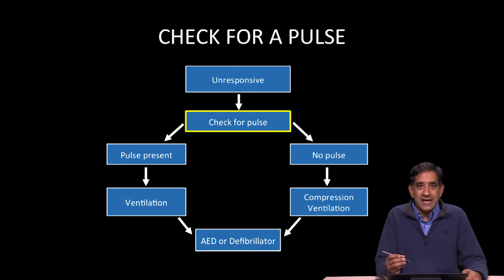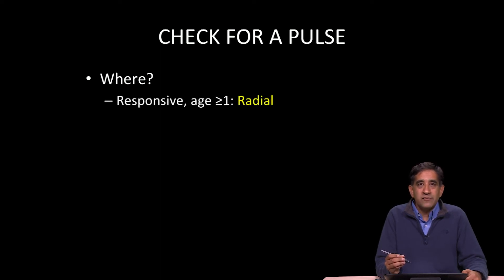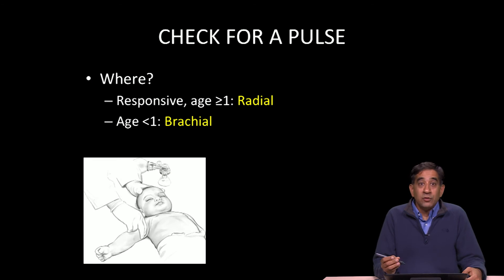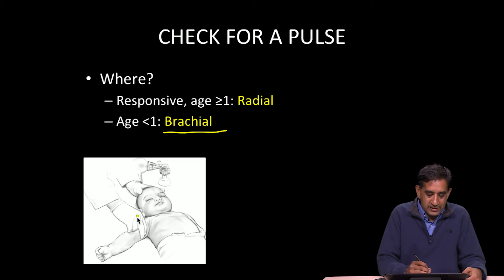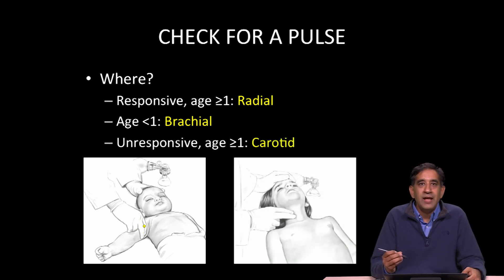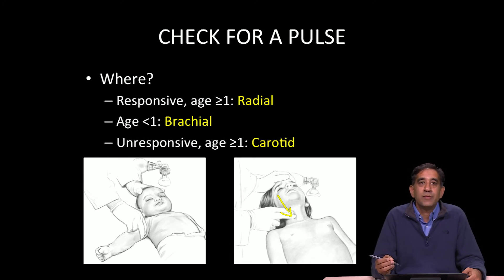After calling for help, the next step is to check for a pulse. Where do you check for a pulse? There are many locations — you can check radially, femorally, brachially, or the carotid. It really depends on the patient's age and their condition. In a responsive patient who is over the age of one, you're going to check at their radial pulse location. If they're less than one, regardless of their condition, you're going to check for a brachial pulse — as this clinician is doing right here. If they're over the age of one and they're unresponsive, the location you're going to check is the carotid artery.